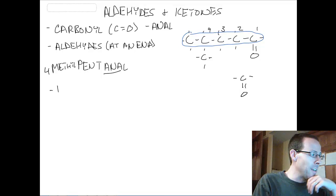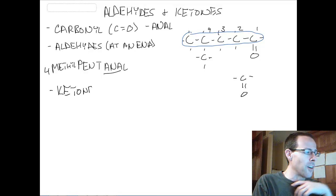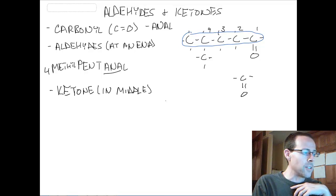Our other one is a ketone. And a ketone is any time we have the carbonyl group somewhere in the middle. So it doesn't matter where in the middle. It doesn't have to be exactly the middle. But if it's not at one of the ends, it is a ketone.